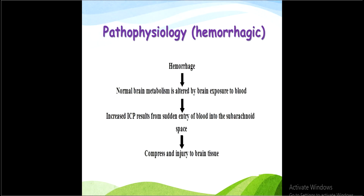Pathophysiology of hemorrhagic stroke: Hypertension की वजह से brain cells में hemorrhage होता है। Blood vessels leak होती हैं, blood cells damage होते हैं, brain cells damage होती हैं, metabolism alter और disturb होता है। Blood arachnoid space में fall होता है, brain cells पर pressure बढ़ता है और brain compress होने लगता है।